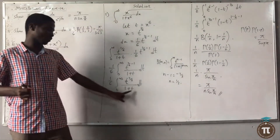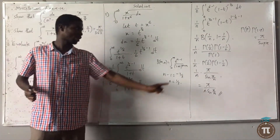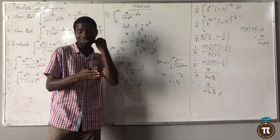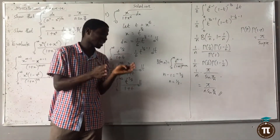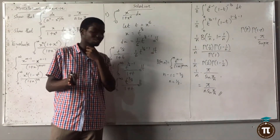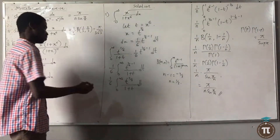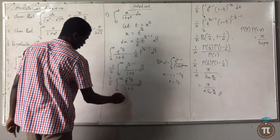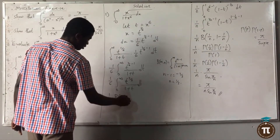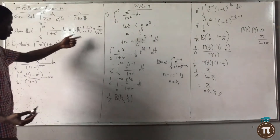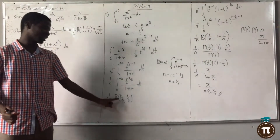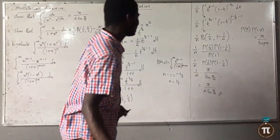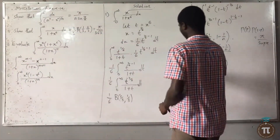If n equals 1/3, then m equals 2/3, because the power of (1 plus t) here is 1, so m plus n must give 1. And since n is 1/3, m equals 1 minus 1/3 equals 2/3. So this equals 1/6 · Beta(2/3, 1/3). The beta function is symmetric, so Beta(2/3, 1/3) equals Beta(1/3, 2/3).